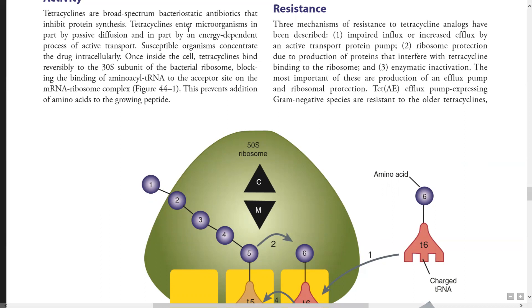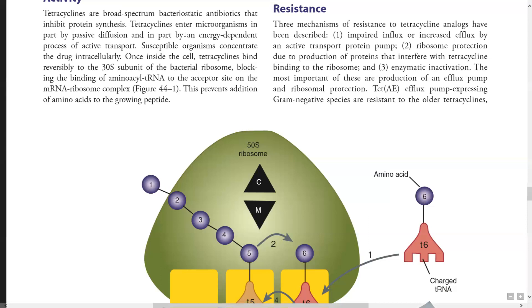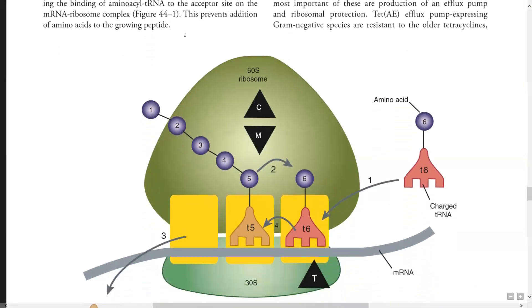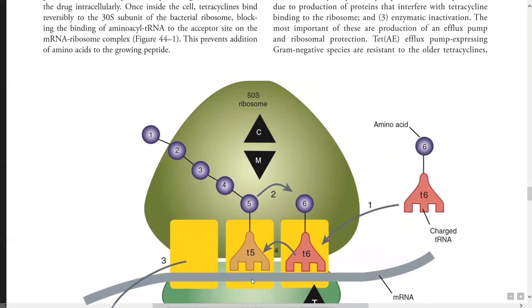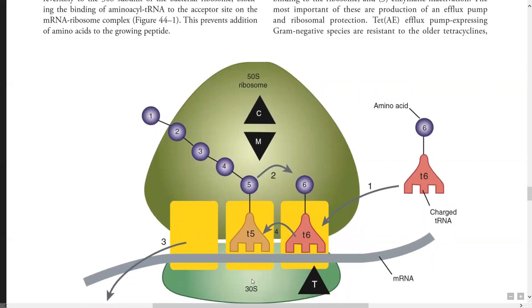Tetracycline enters microorganisms in part by passive diffusion and in part by energy-dependent processes of active transport — so there are two ways of tetracycline entering the cell. What actually happens when a susceptible organism takes up tetracycline intracellularly is that these tetracyclines will bind to the 30S subunit of the ribosome in the bacterium.